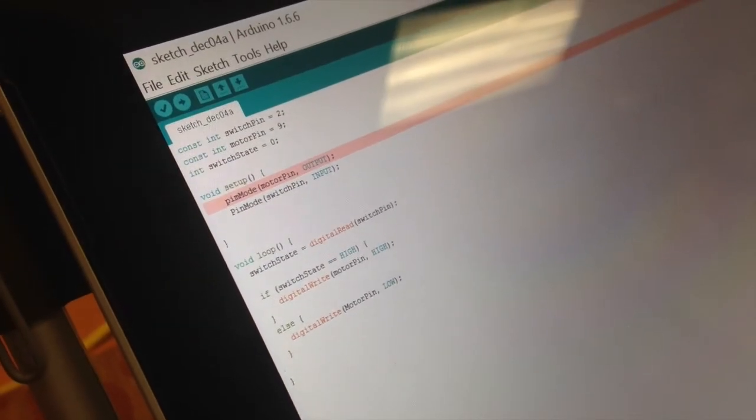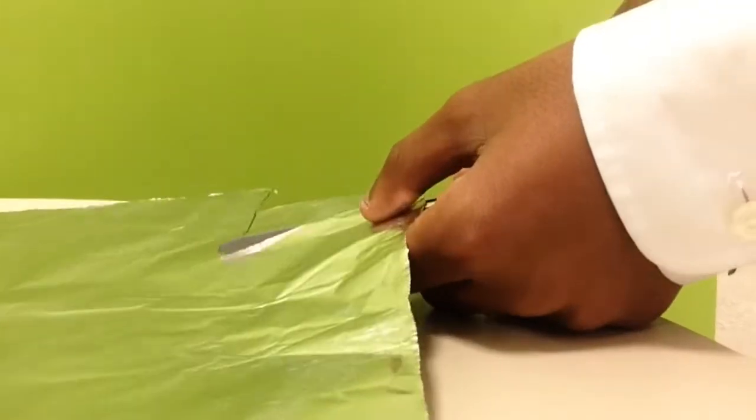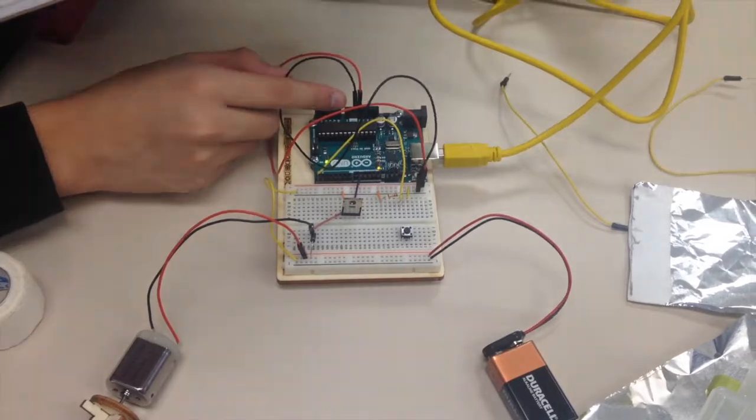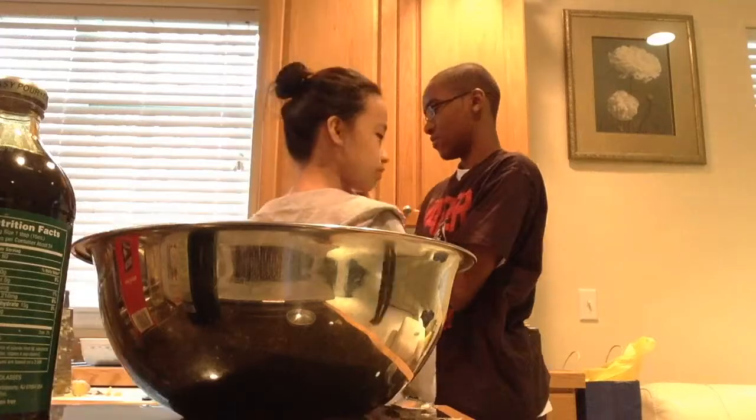After we finished planning out our design, we got to the baking and building. On Friday, December 4th, our team spent our time learning about and programming the Arduino, as well as documenting. The next day, our team baked and constructed our gingerbread house and gingerbread man out of architectural dough and royal icing.